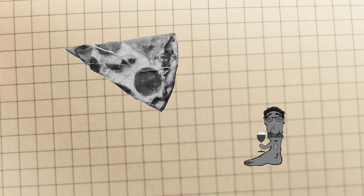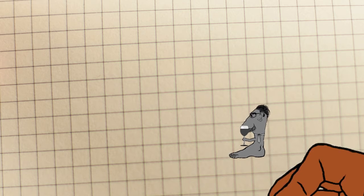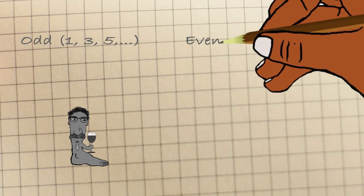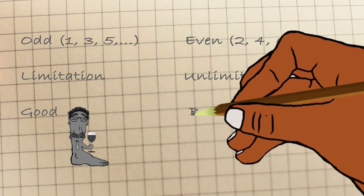Similarly, all things result from a mixture of two kinds of numbers. The odd and the even numbers.